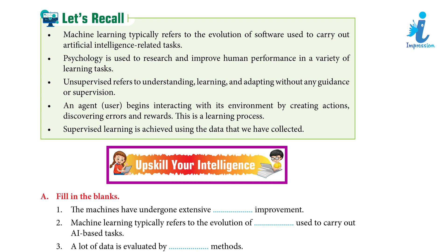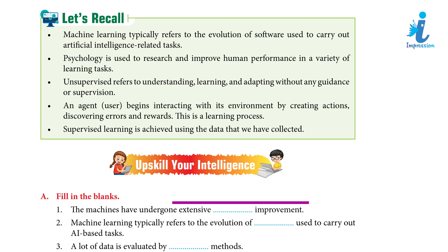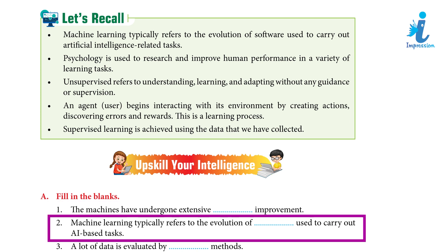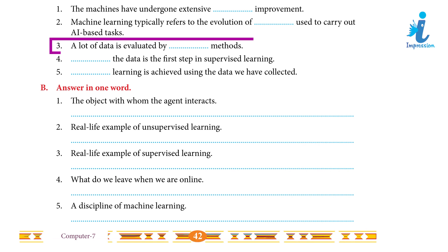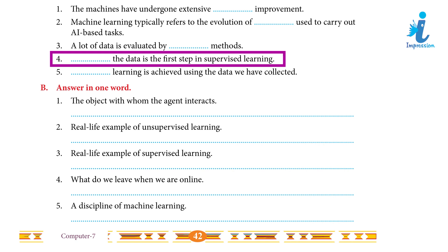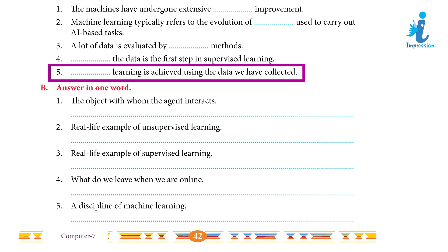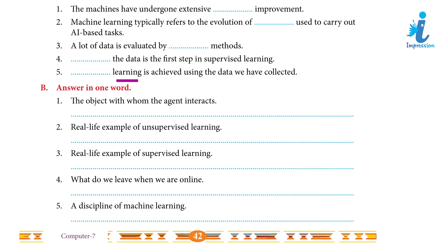Upscale your intelligence — Fill in the blanks: 1. The machine has undergone extensive ___ improvement. Answer: Human. 2. Machine learning typically refers to the evaluation of ___ used to carry out AI-based tasks. Answer: Software. 3. A lot of data is evaluated by the ___ method. Answer: Statistical. 4. ___ the data is the first step in supervised learning. Answer: Labeling. 5. ___ learning is achieved using the data we have collected. Answer: Supervised.